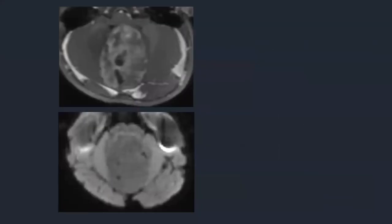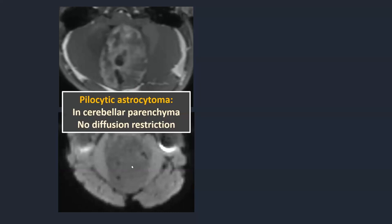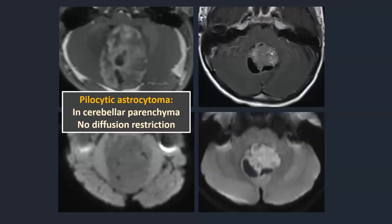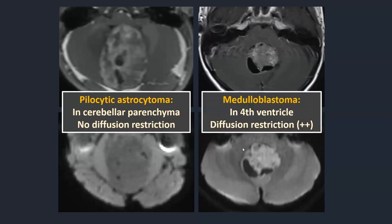Let's compare: our pilocytic astrocytoma patient shows a heterogeneous completely solid mass with no diffusion restriction whatsoever. The medulloblastoma shows an enhancing mass with peripheral cystic components and diffusion restriction. Pilocytic astrocytomas are located in the cerebellar parenchyma and have no diffusion restriction. Medulloblastomas are the classical textbook cases located in the fourth ventricle with diffusion restriction.